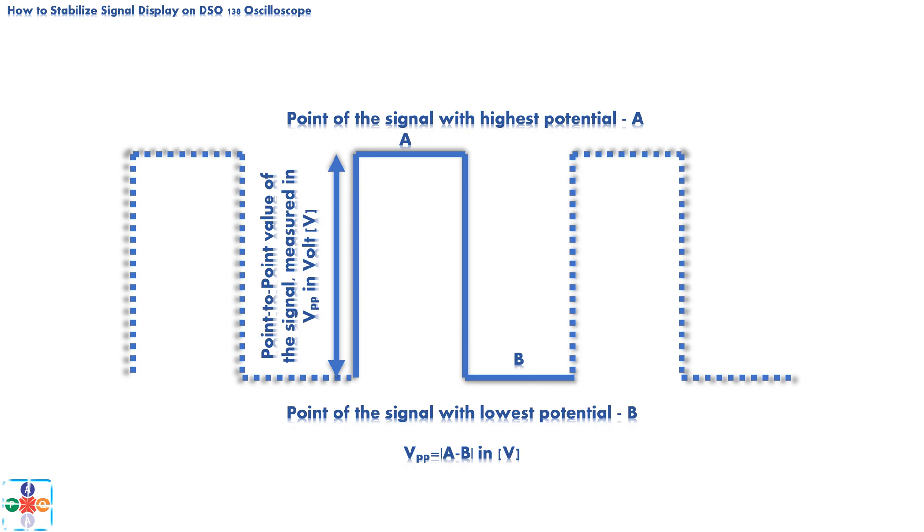Second most important characteristic of the signal is his point-to-point value, expressed in volts. It tells us the absolute value of the signal, which is a result of potential differences, of point of the signal with lowest potential and point of the signal with highest potential. This point-to-point value is an absolute value, and it is not referenced to ground or earth zero ground.